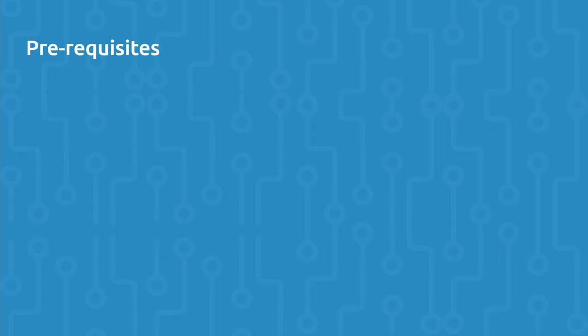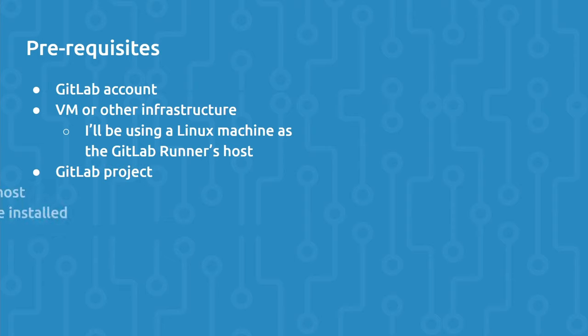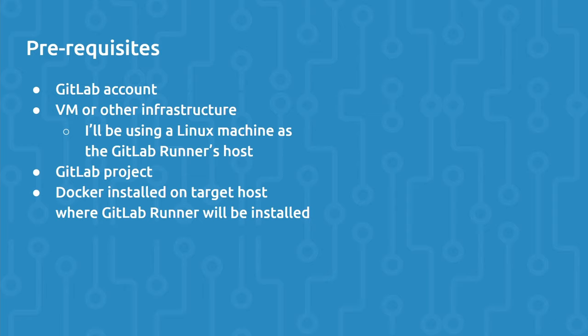If you intend on following along with the tutorial, there are some prerequisites. First, you'll need a GitLab account. You'll also need a virtual machine or your local machine in order to install the GitLab Runner program. In this video, I'll be using a Linux machine as the GitLab Runner's host, a GitLab project, and you'll need Docker installed on the target machine since I'll be using the Docker executor. The GitLab project I'm using is linked in the video description below. So now let's get started with the tutorial.